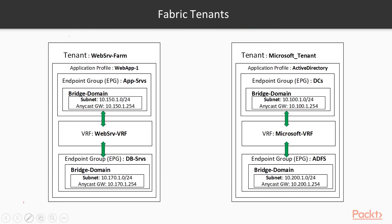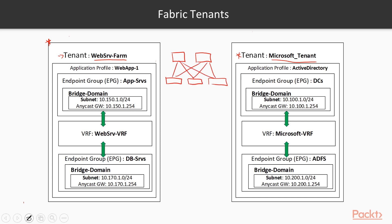Now you understand the power of tenancy in ACI or any SDN-based network — we can virtualize a whole network running on top of a physical network. To make it easier, think of a tenant as a network. This is the network for the web servers, and I build a completely different network for my Microsoft tenant. Both of them communicate on the same ACI fabric, but they're running on top of the same physical equipment.